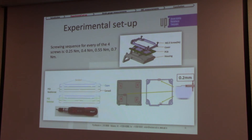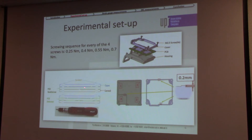The PCB is assembled between a housing and a cover with four M2.5 screws. On the housing and cover, bumps of 0.2 mm were added to simulate the surface-level differences where the PCB is placed. This shows how the PCB bends and where strain develops. Screwing was done in four torque steps: 0.25 Nm, 0.4 Nm, 0.55 Nm, and 0.7 Nm.